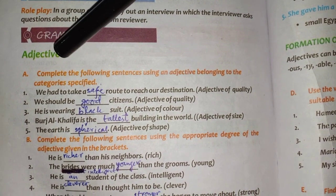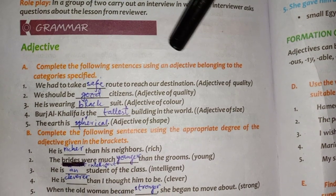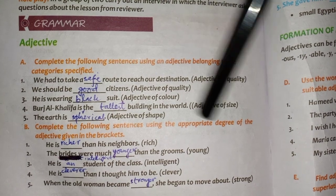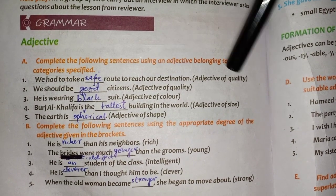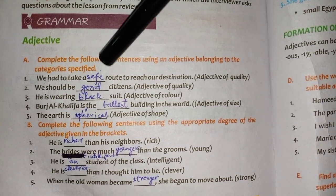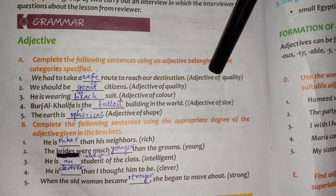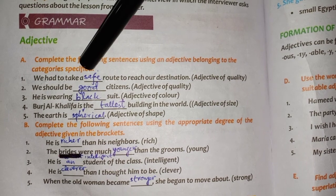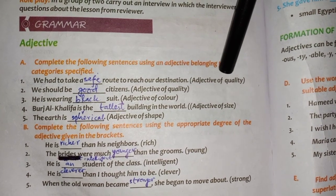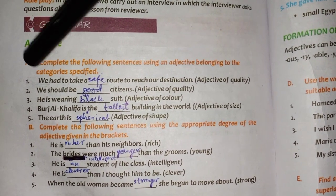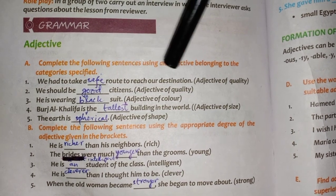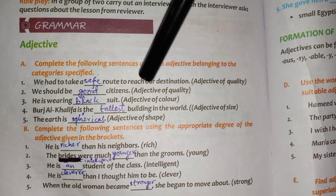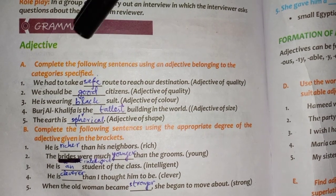Question A: complete the following sentences using an adjective belonging to the categories specified. There are several categories mentioned in front of the sentences and we have to use an adjective according to that category. So here we have to use adjective of quality. We had to take a safe route to reach our destination. Part two: we should be good citizens — adjective of quality again.